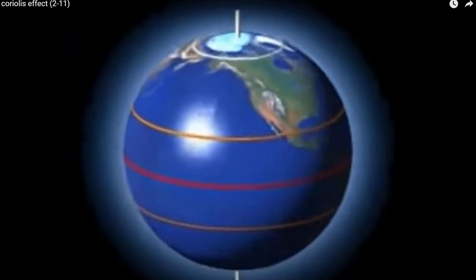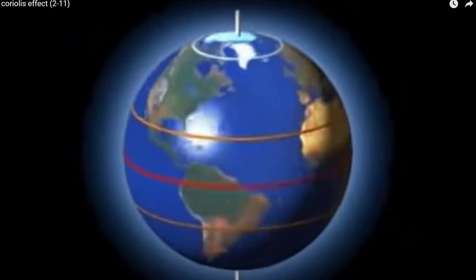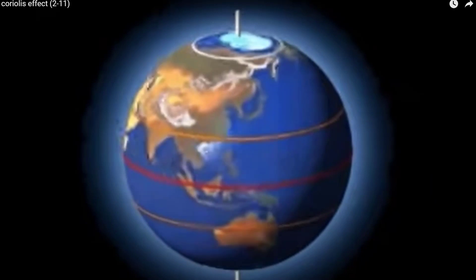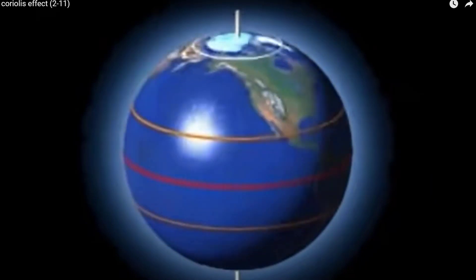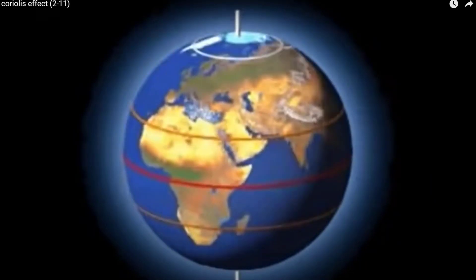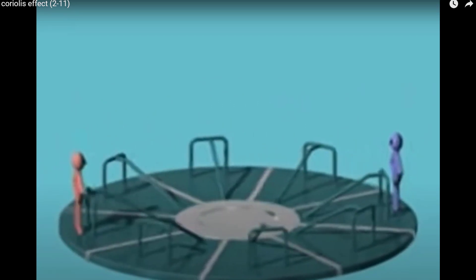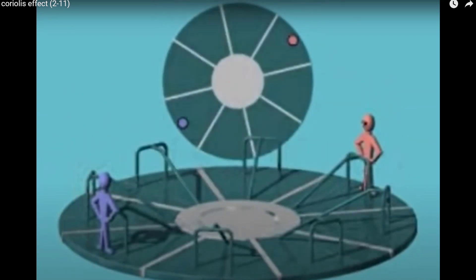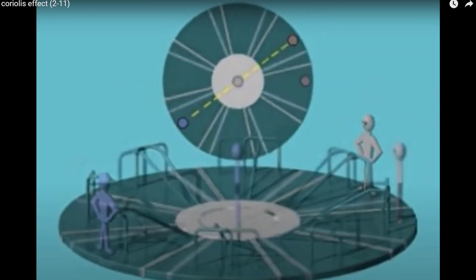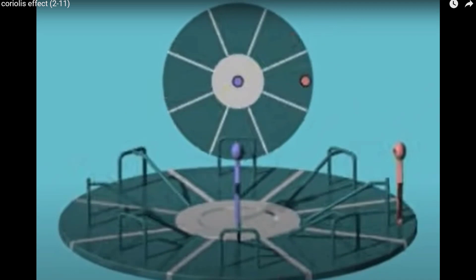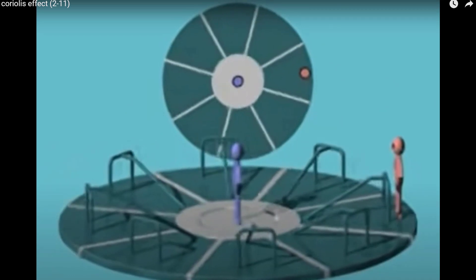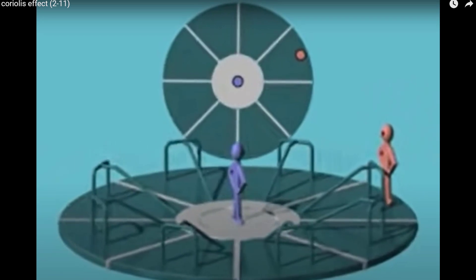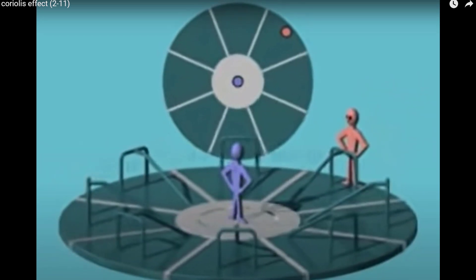Coriolis effect, an object in motion appears to be deflected from its course, as if a force is pulling it sideways. To demonstrate this point, let's imagine a game of catch being played by two people on a merry-go-round that spins like the earth, but is flat. Without rotation, the ball appears to follow a straight path from thrower to catcher. Imagine the ball is tossed from the center to someone at the edge. With rotation, the ball still travels in a straight line in space, but because the catcher is moving, the ball misses.